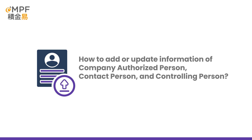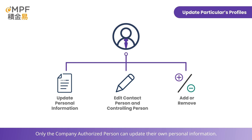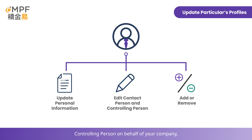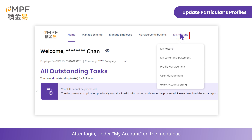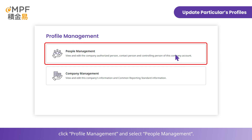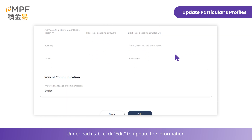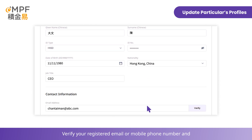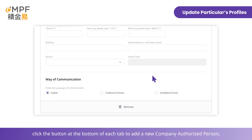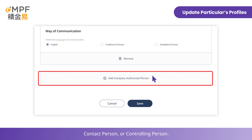How to add or update information of company authorized person, contact person, and controlling person. Only the company authorized person can update their own personal information. If you are the company authorized person, you can also edit the information of contact person and controlling person on behalf of your company, as well as add or remove other company authorized persons. After login, under My Account on the menu bar, click Profile Management and select People Management. Under each tab, click Edit to update the information. Verify your registered email or mobile phone number and click the button at the bottom of each tab to add a new company authorized person, contact person, or controlling person.